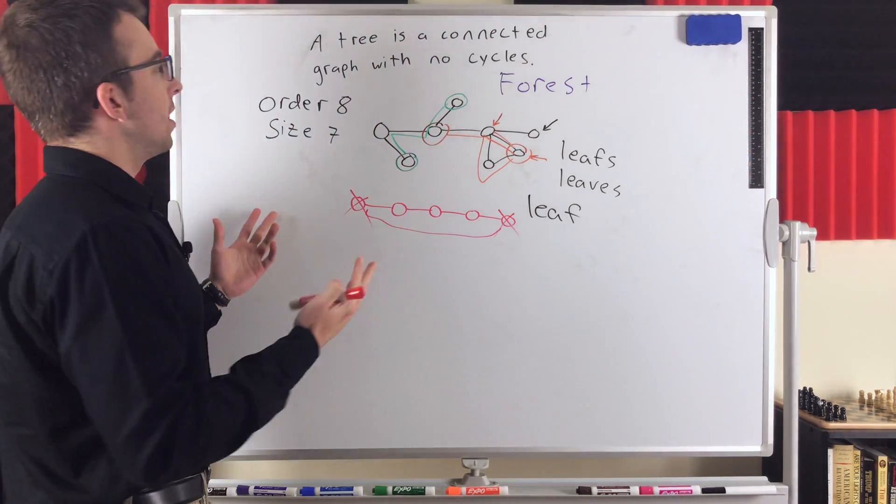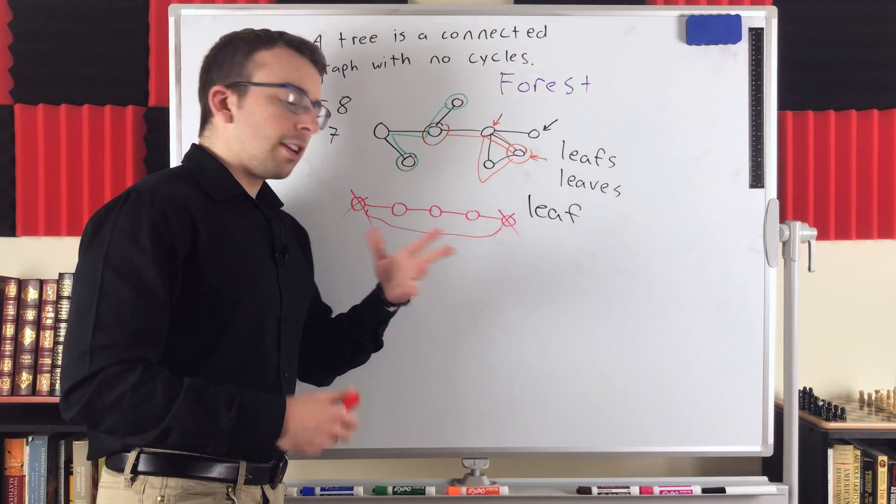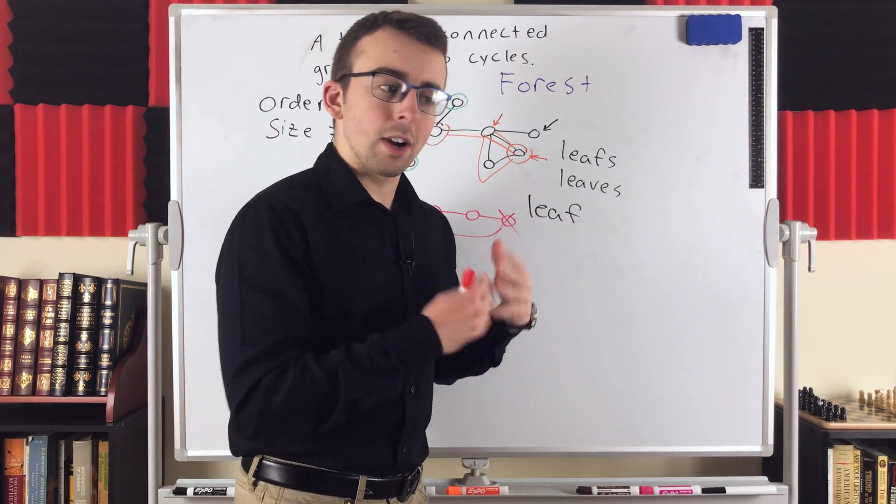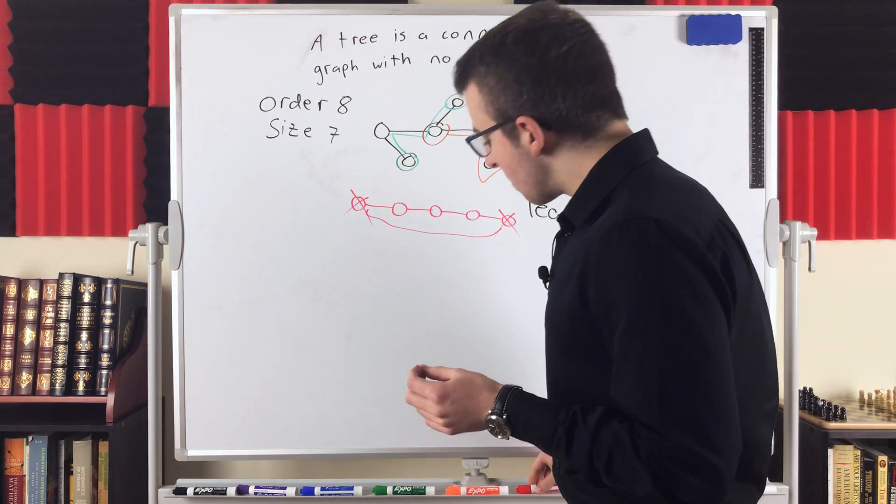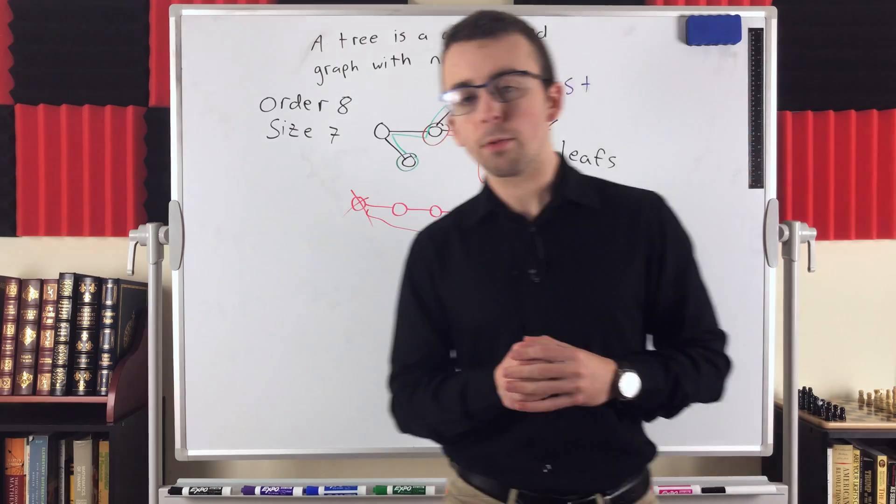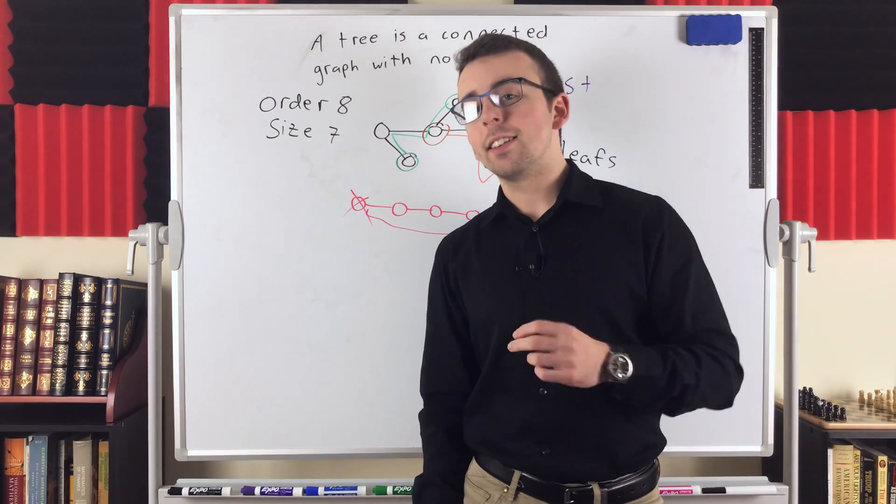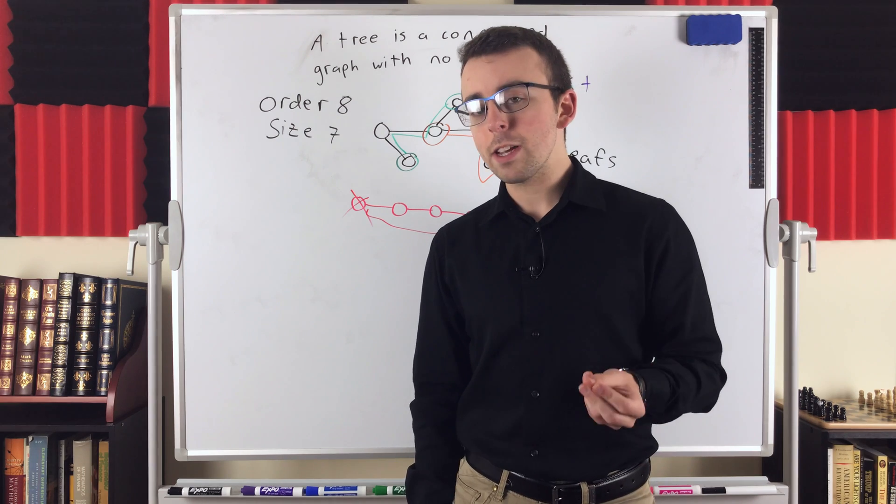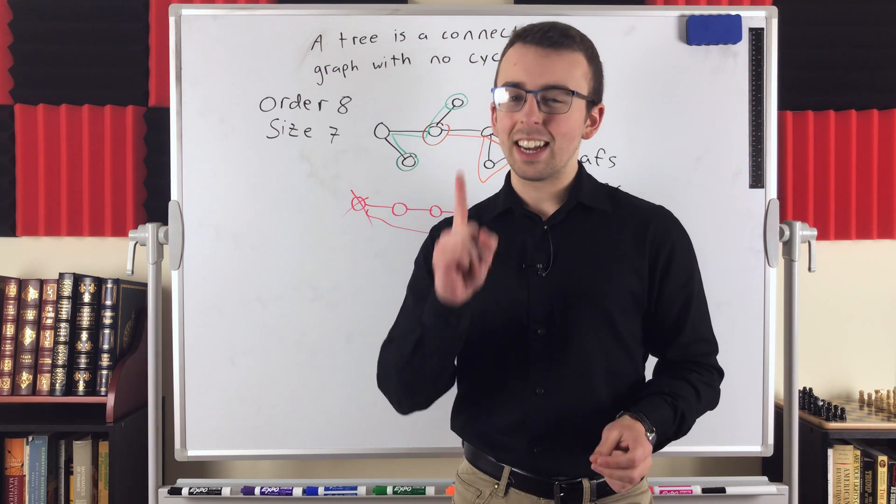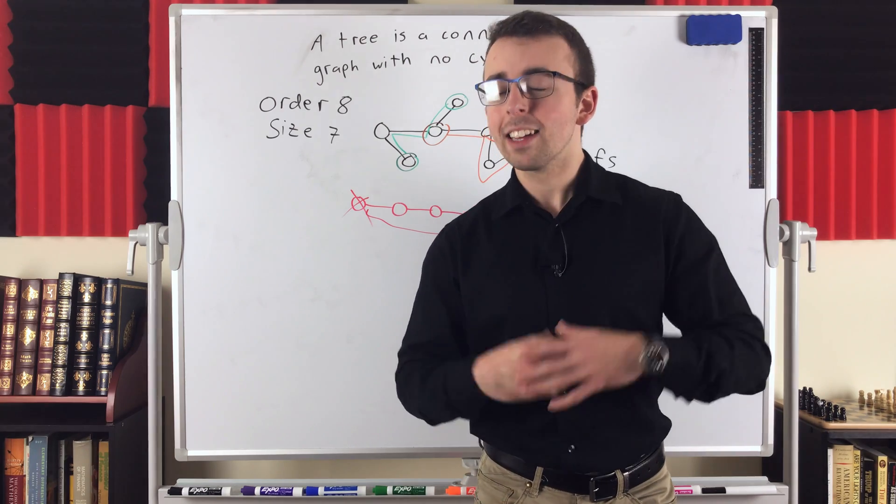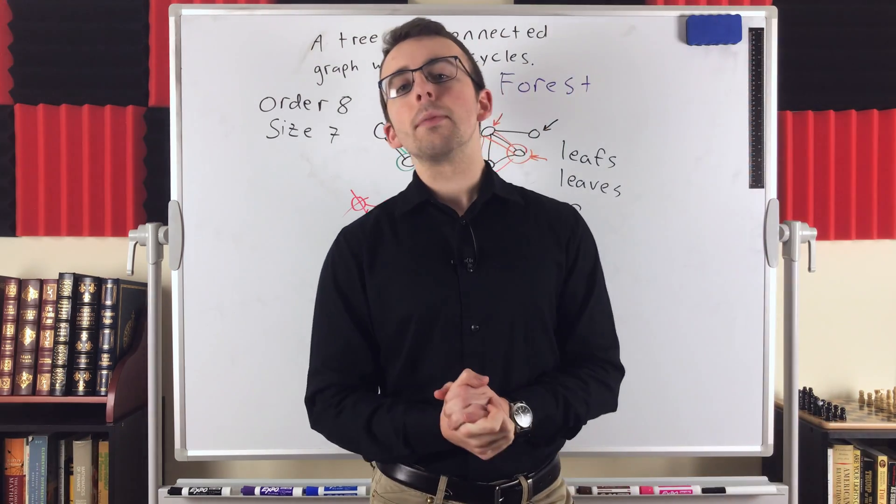So, for practice, with the definition of trees, connected graph with no cycles, I'd recommend, you know, try proving some graphs are trees. Try proving some graphs aren't trees. And then what I think might be the easiest equivalent definition to prove is prove that this definition of tree is equivalent to the definition saying that a graph is a tree, if and only if every pair of vertices in the graph is connected by exactly one unique path. Give that a go. Let me know how it goes down in the comments. I'll probably talk a little bit about it in the description.